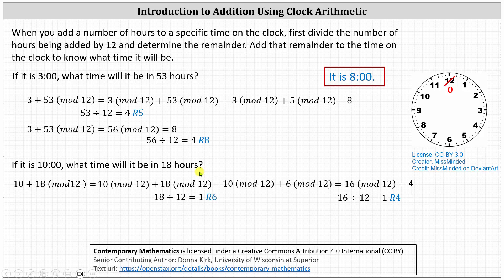Using the clock, we begin with the hour hand pointing at 10, and we go ahead 18 hours. Going ahead 12 hours brings us back to the 10, and from here we count 13, 14, 15, 16, 17, 18, and it is 4 o'clock.